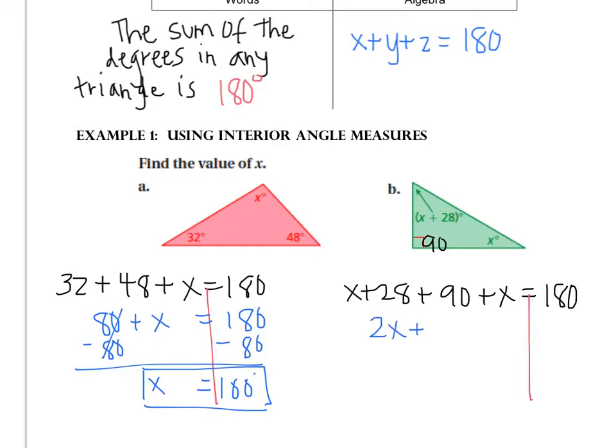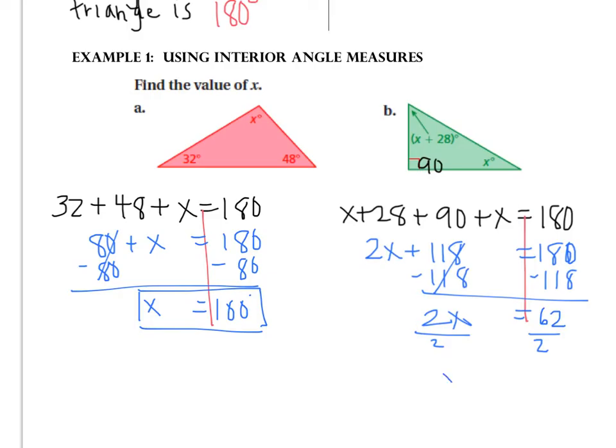Let's combine terms. I have 2x plus 118 equals 180 minus 118. 2x equals 62. And I fixed it because this looked like a 6. So in case you were wondering, it did say 180. And then divide both sides by 2. And we get x equals 31. Now, what they didn't ask us for was the value of the angles. They just asked us for x. But x represents, 31 represents x.